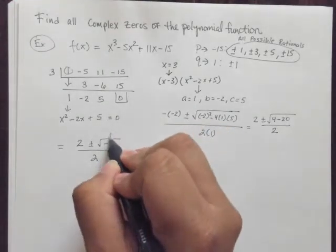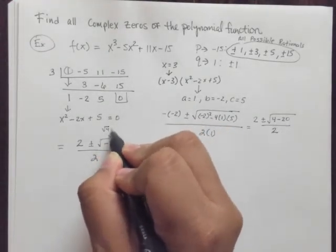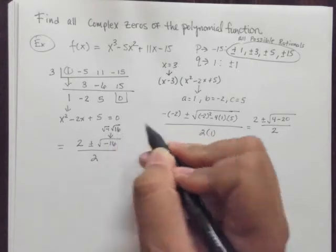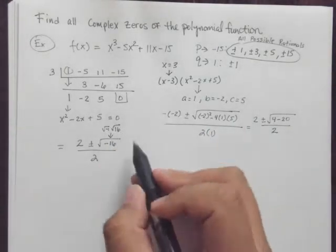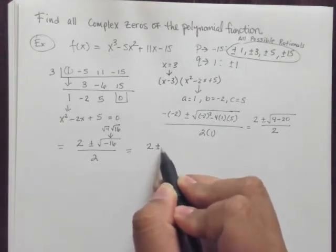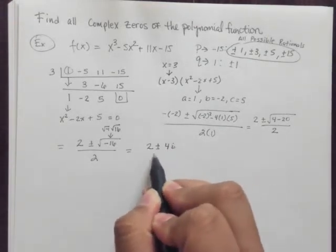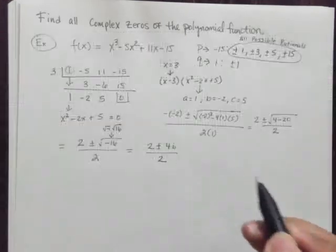2 plus and minus the square root of negative 16 divided by 2. Well, this happens to be the square root of negative 1 times the square root of 16. We know the square root of negative 1 to be i and the square root of 16 to be 4. So 2 plus and minus 4i divided by 2.